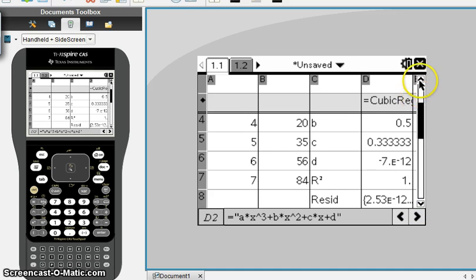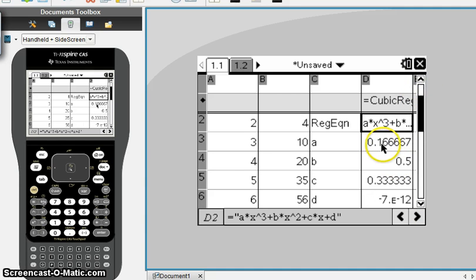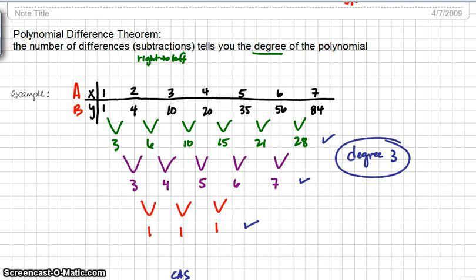So the A value was 0.16 repeating. The B value is 0.5. The C value is 0.3 repeating. The D value looks a little funny. This is just a number in scientific notation. It means negative 7 times 10 to the negative 12th power. And that means you're basically going to move the decimal point on the negative 7 12 places to the left. If you did that, you'd get a very small decimal. So we're just going to represent that that number is the number 0.